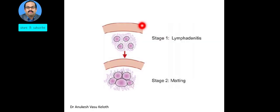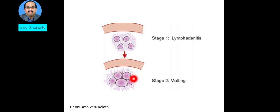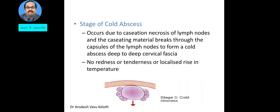As you can see in the diagram, the skin is at the top, the line represents the deep fascia, and these are the deep cervical nodes. In the second stage, the nodes are now joining with each other — this is known as matting — and the entire process remains deep to the deep fascia. In the third stage, there is caseation necrosis within the lymph nodes, and the caseating material breaks through the capsules of the lymph nodes to form a cold abscess deep to the deep cervical fascia.